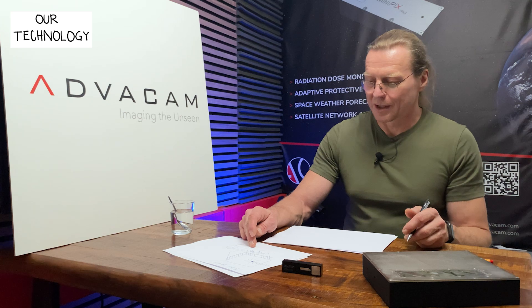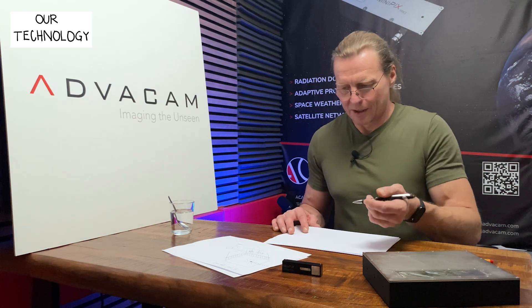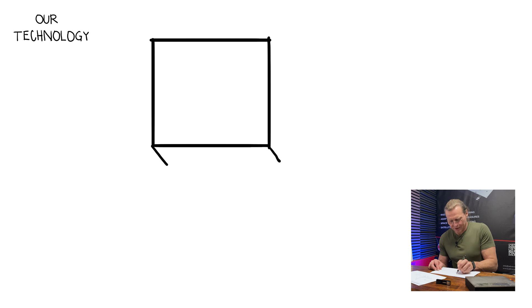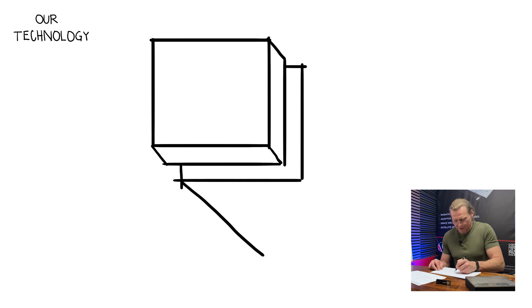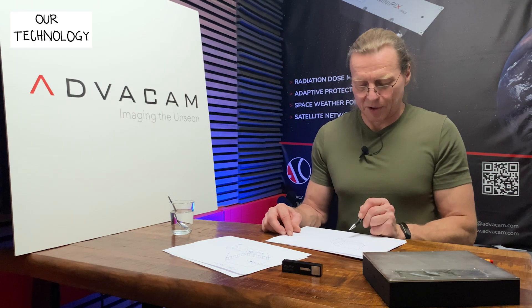Our technology of photon counting works differently. Again, I would draw a structure of one pixel. So that would be our pixel. Our pixel has also some layers. Instead of scintillator, we have the semiconductor sensor, which is connected to another layer, layer containing electronics for processing of signal from this semiconductor sensor.